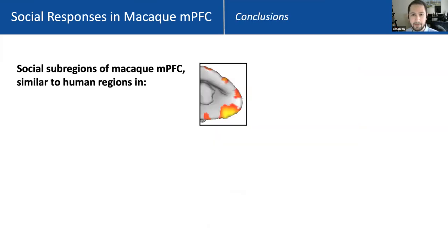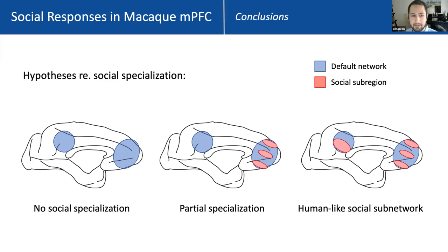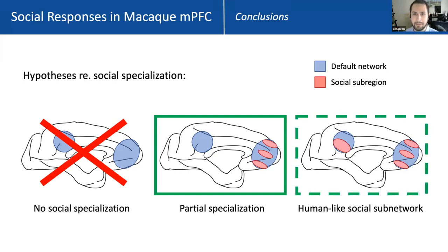To summarize: we've identified a set of socially preferring subregions in macaque mPFC, which are similar to corresponding human areas in anatomical organization, response profile across multiple categories, and resting state functional connectivity. These results rule out the hypothesis of no specialization, indicating some early social specialization in the macaque, and are most consistent with partial specialization — we only find this in mPFC, not other parts of the default mode network, with no evidence of distinct subnetworks throughout association cortex. That said, we can't rule out a fully human-like social subnetwork of the DMN, which might be revealed by a more active social interaction task or more sensitive methods like electrophysiology.